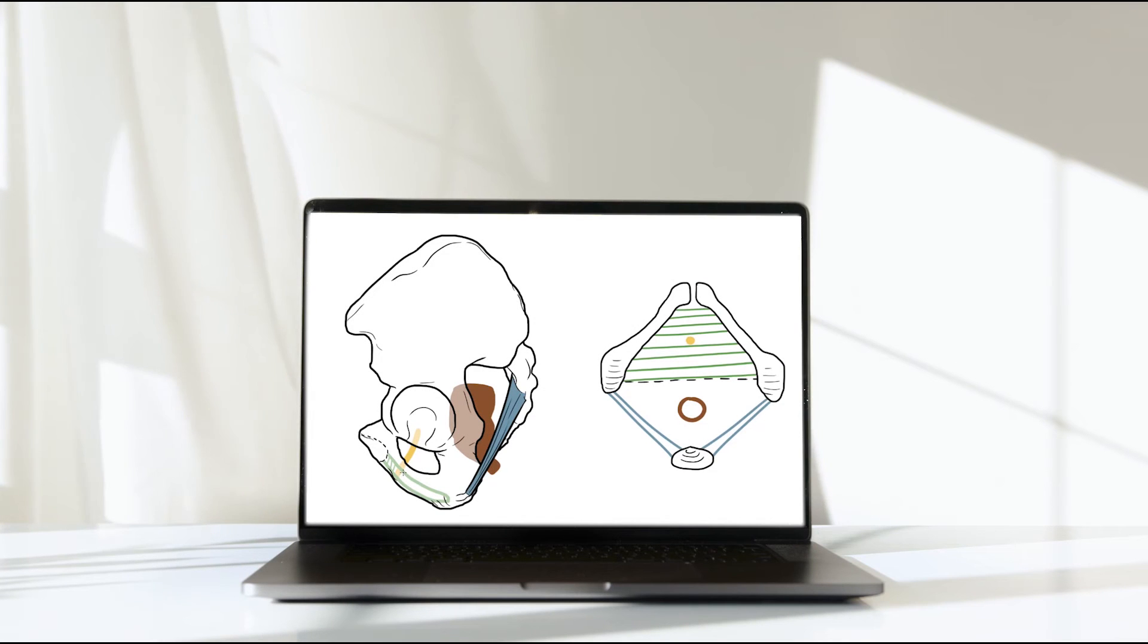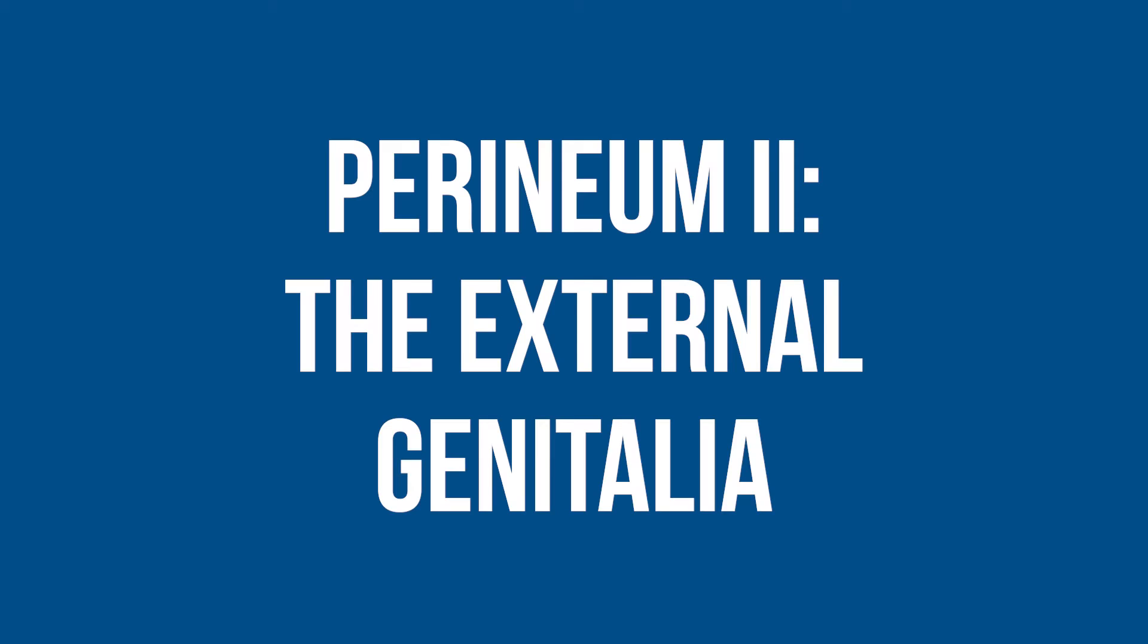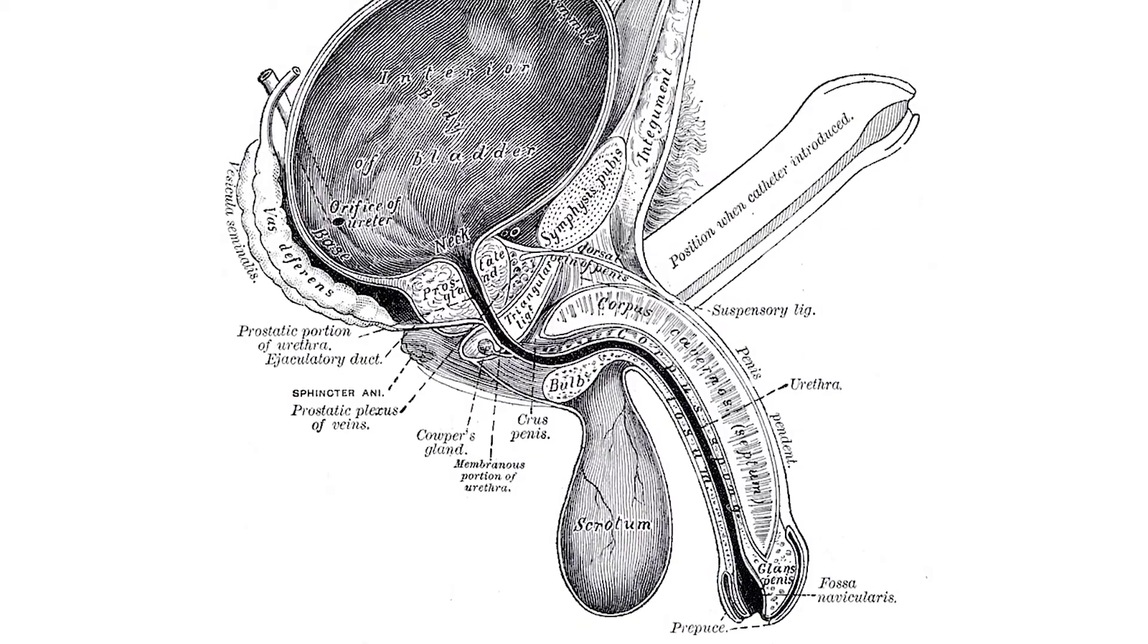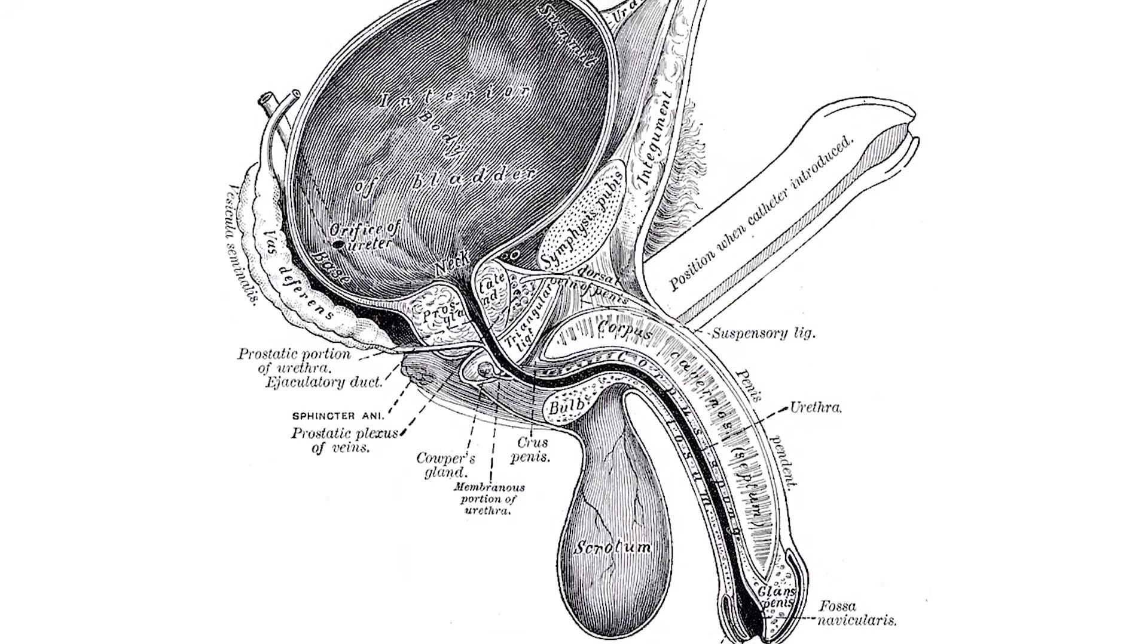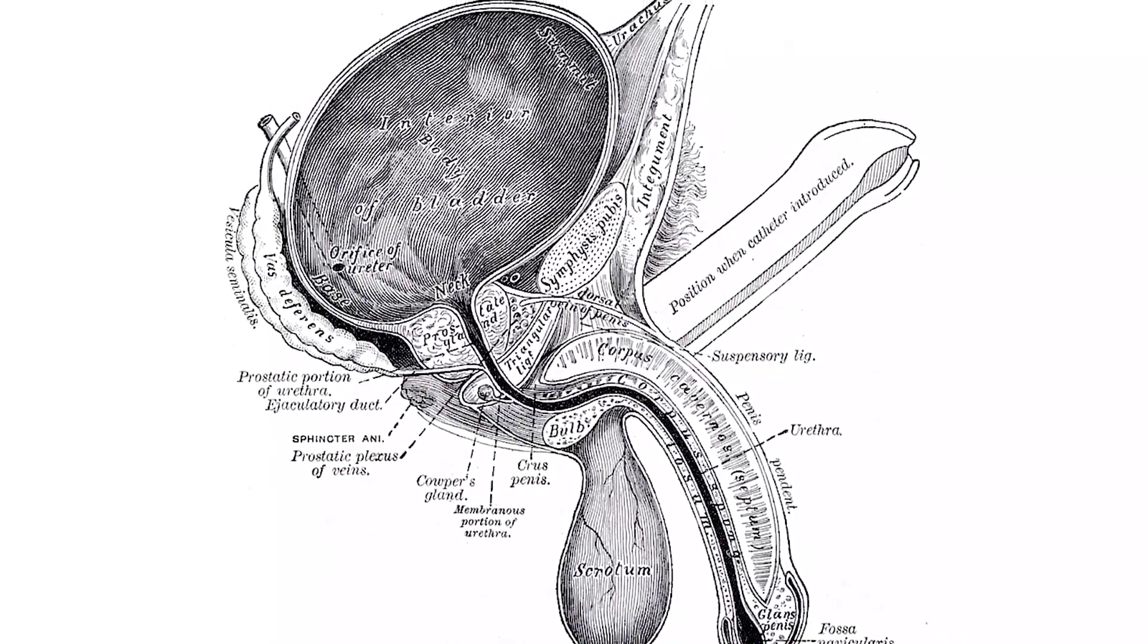In this video we'll be building on a previous illustration looking at the perineum and the urogenital diaphragm. In this next stage we're going to add the external genitalia. Now for this series I'll only be drawing the male external genitalia and there are a couple of reasons for this.